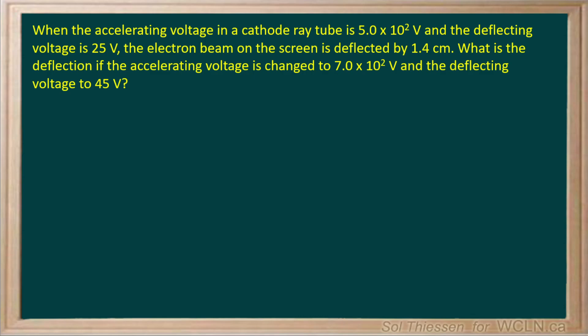When the accelerating voltage in a cathode ray tube is 500 volts and the deflecting voltage is 25 volts, the electron beam on the screen is deflected by 1.4 centimeters. What is the deflection if the accelerating voltage is changed to 700 volts and the deflecting voltage to 45 volts?